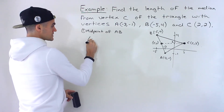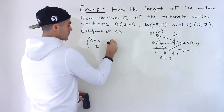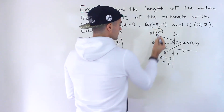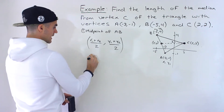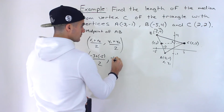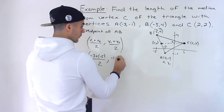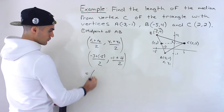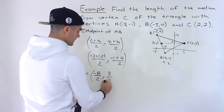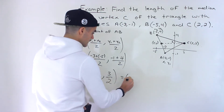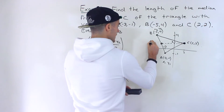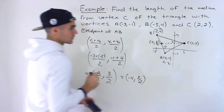What is the midpoint formula? Well, it's (x1 plus x2) divided by 2 and then (y1 plus y2) divided by 2. So we get x1 plus x2 divided by 2, which is negative 3 plus negative 5, giving us negative 8 over 2, which is negative 4. And then y1 plus y2 is negative 1 plus 4, giving us 3 over 2.